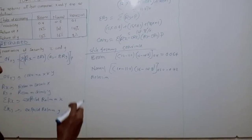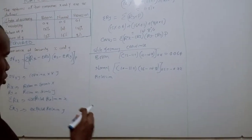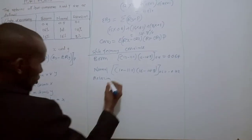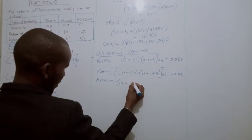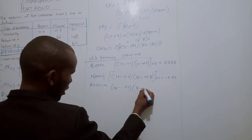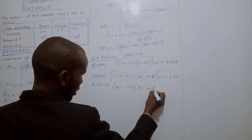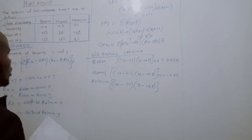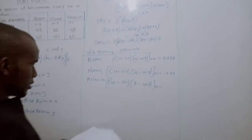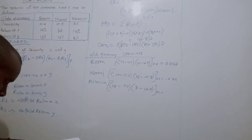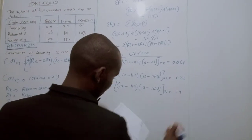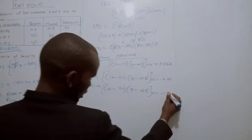Lastly, when the economy is in recession, the return on X is 14 and the return of Y is 8. We take 14 minus 11.2, multiplied by 8 minus 14.8, then multiplied by the recession probability of 0.1. So: (14 − 11.2) × (8 − 14.8) × 0.1 = −1.904.